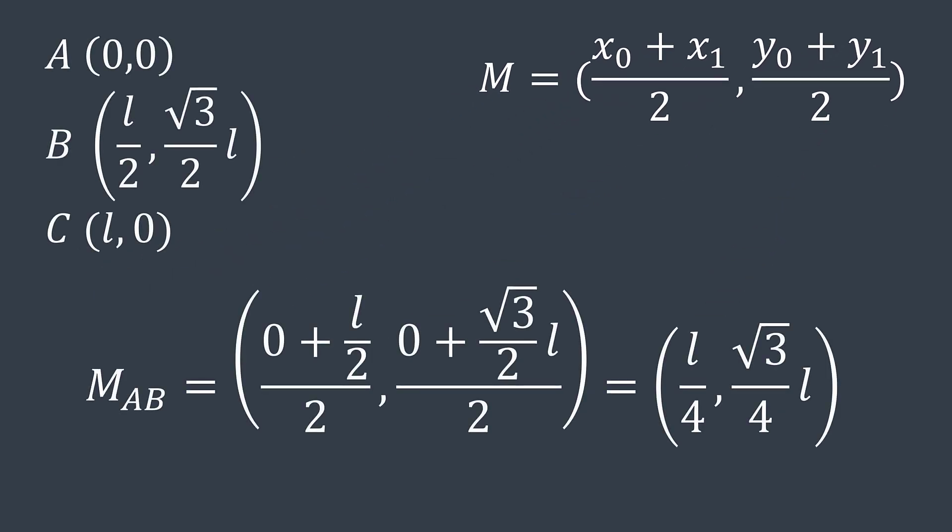Let's do it for our points. A is at zero zero and B at L divided by two, square root of three divided by two times L. So the midpoint is L divided by four, L times square root of three divided by four.